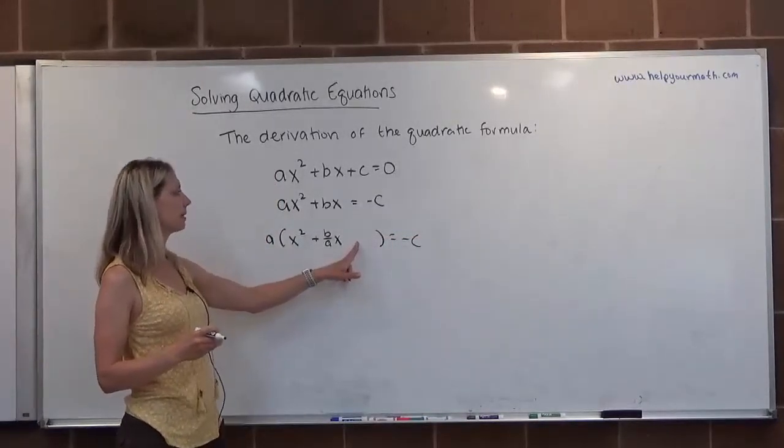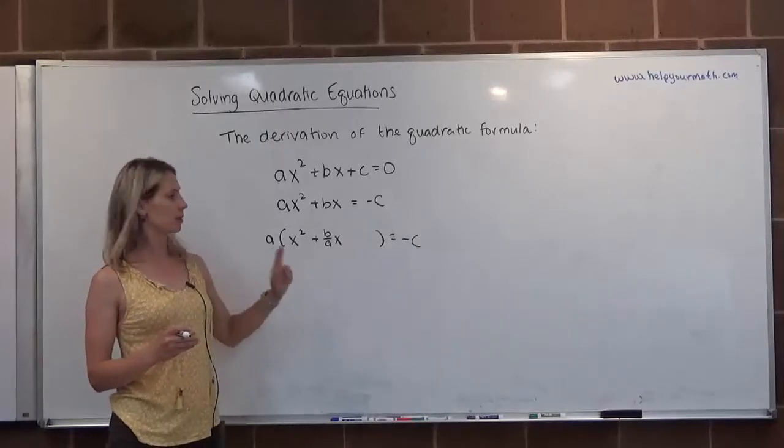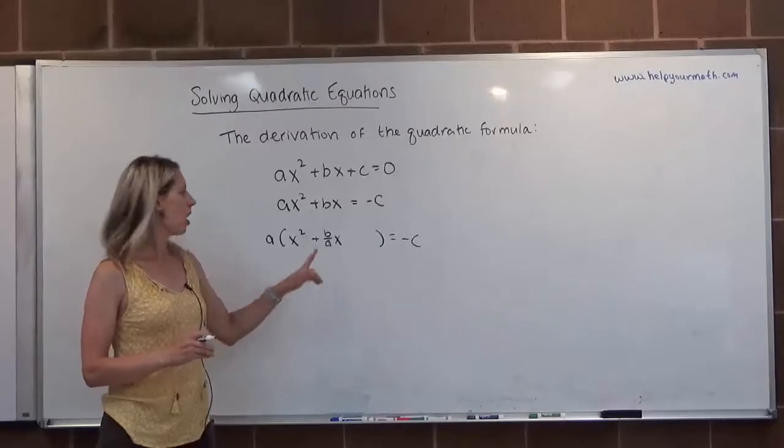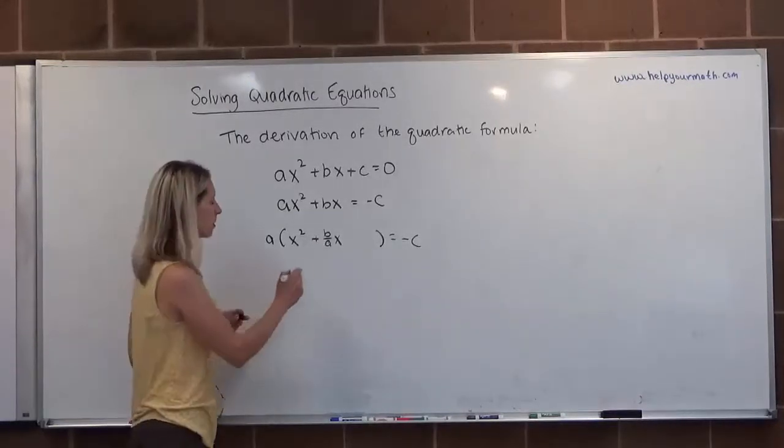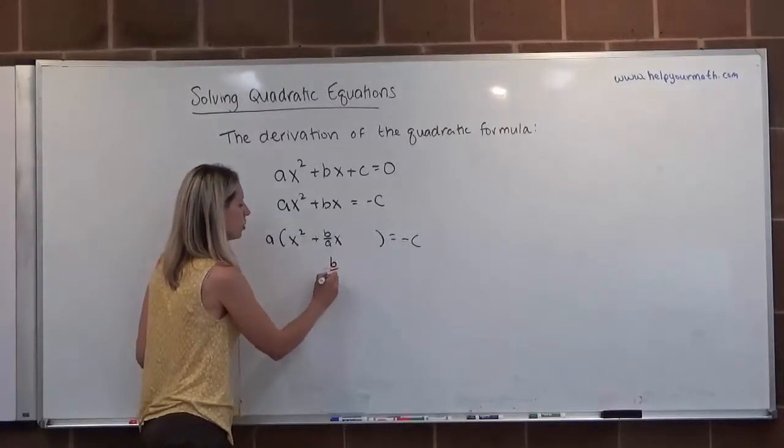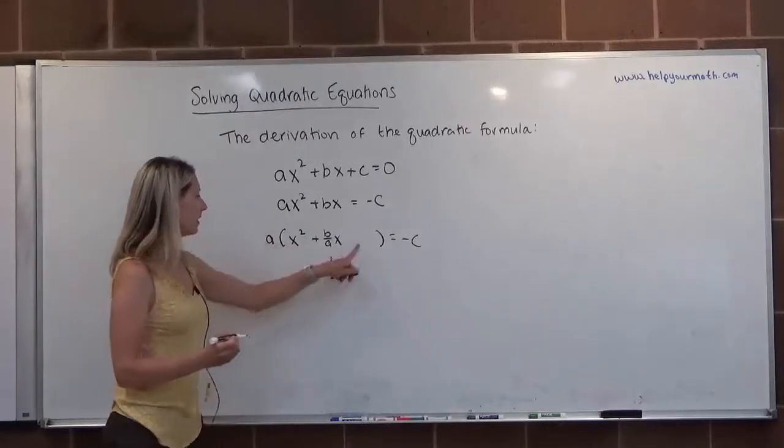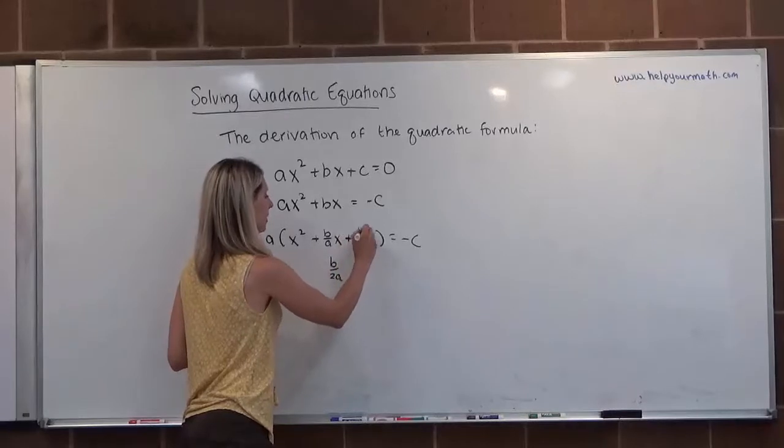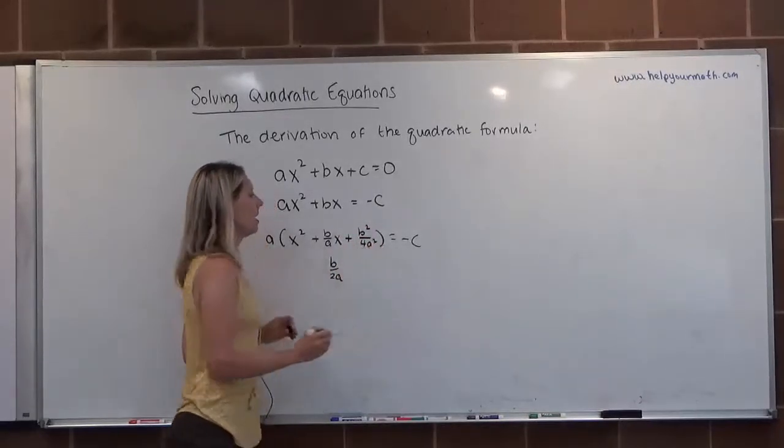Now I need to complete the square. In order to complete the square, I'm going to start here where I have b over a times x. I know that this is double the root that I'm looking for, so half of this would be b over 2a. And then I need this to be its square, which would be plus b squared over 4a squared.